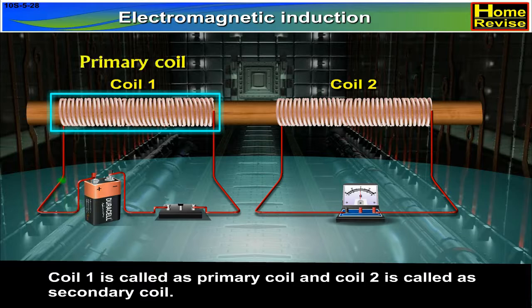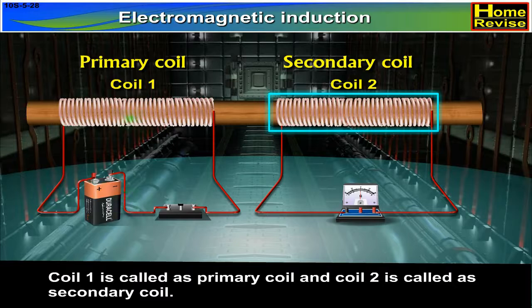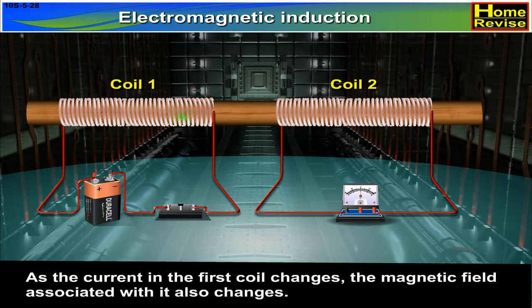Coil 1 is called the primary coil and coil 2 is called the secondary coil. As the current in the first coil changes, the magnetic field associated with it also changes.